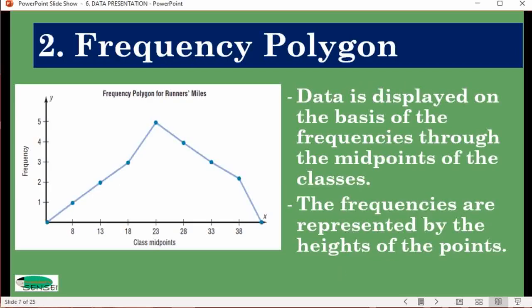The second type of graph is the frequency polygon. From the word polygon, you're expected to create a shape by connecting the dots, which are the frequencies of each class midpoint. Because there are heights, it should be closed to create a polygon, hence the term frequency polygon.